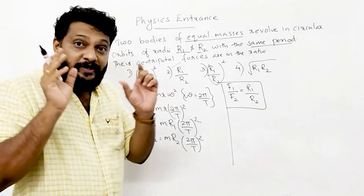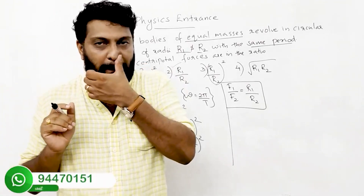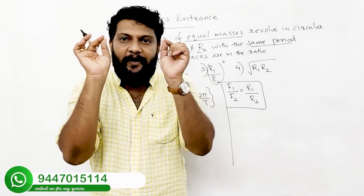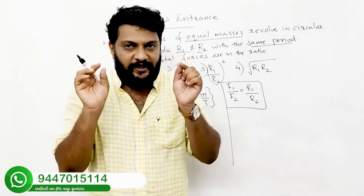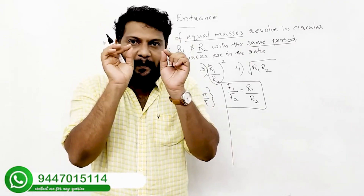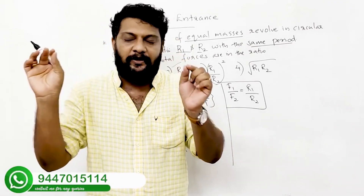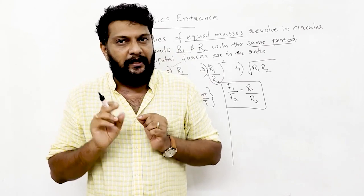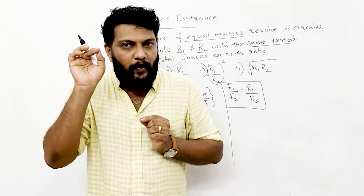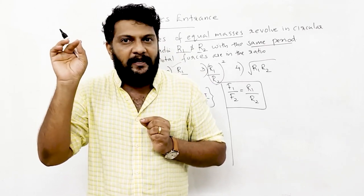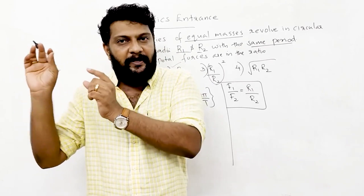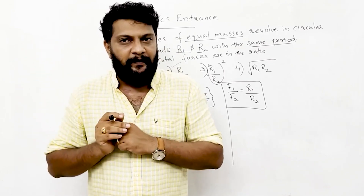For two bodies, F is equal to m·r·ω², where ω = 2π/T. The ratio of centripetal forces F1 by F2 is equal to r1 by r2.